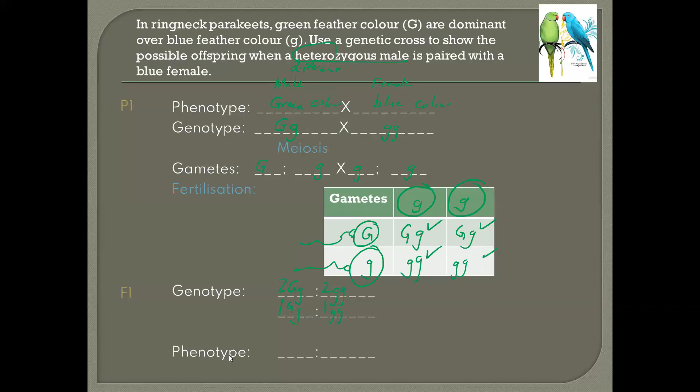From there, we'd want to fill in the phenotypes. So what are the colors of the offspring? We know that small g and small g, given in the information, small g is for blue. These would be blue offspring. This would also be blue. Above here, this would be green. And this one would also be green. So if we count here, we've got two green offspring in the F1 is to two blue colored offspring. And then again, we'd simplify the ratio so that you say that the ratio of the phenotype is one green is to one blue.